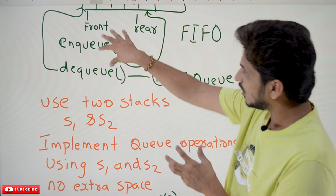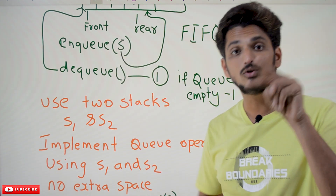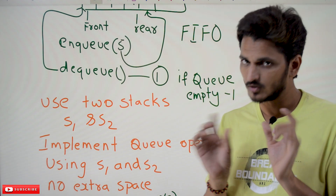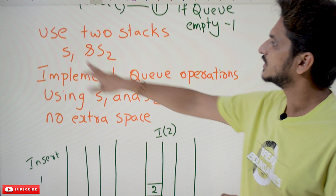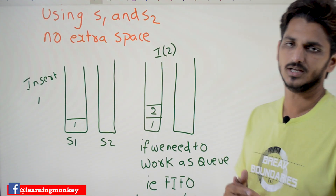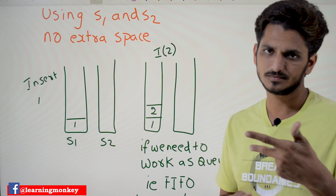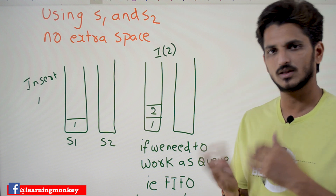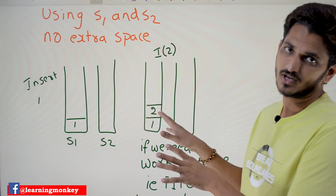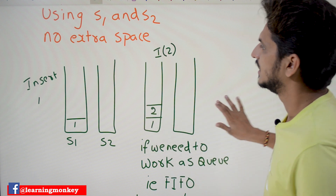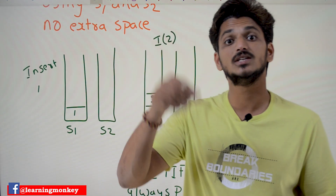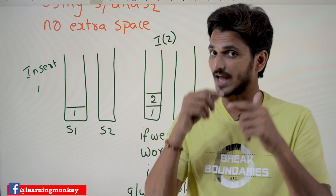Now coming to today's example — we need to implement Queue operations using two stacks, we should not use any extra space. Using two stacks S1 and S2, we have to implement Queue. We can go with two ways; we will explain both the ways. The stack operations are last in first out, and the stack has a stack top.